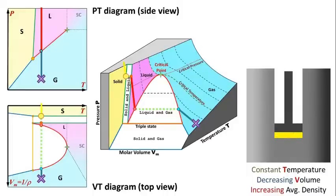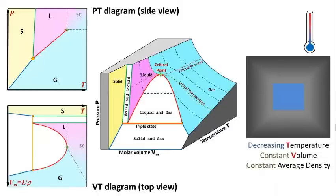Let's do another example. Moving straight left on the VT diagram means cooling the material. But now, you have to imagine that it's trapped in a rigid container of a fixed volume. It is not allowed to expand or shrink freely. And the average density remains constant. So what happens now when we hit the transition line? Well, liquid does start to condense.